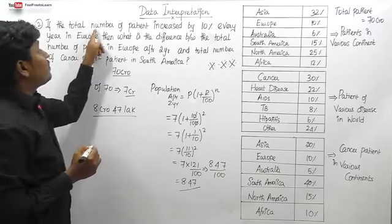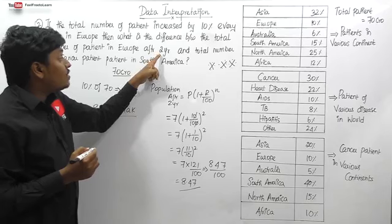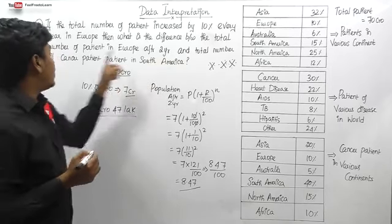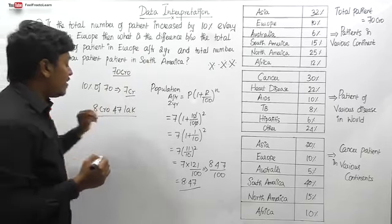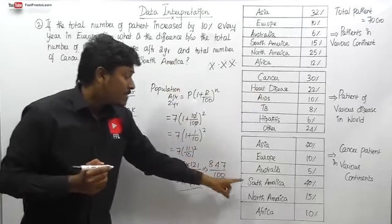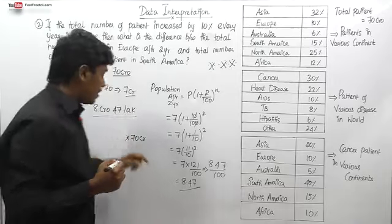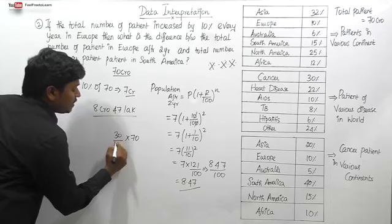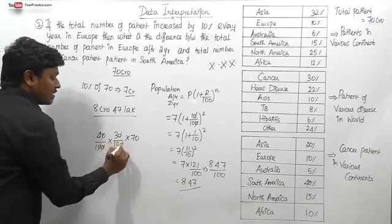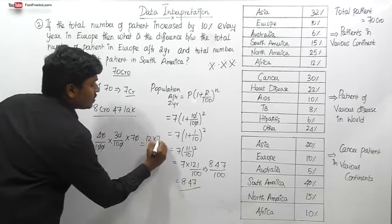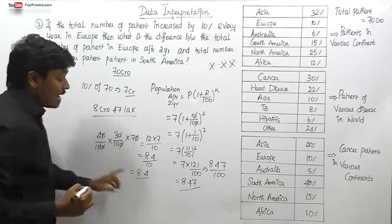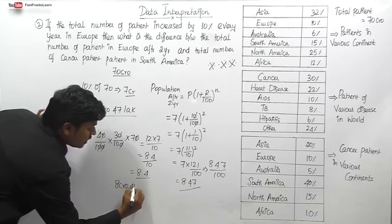Now for the second part: cancer patients in South America. Out of 70 crores, cancer patients are 30%. Out of cancer patients, South America is 40%. So 70 into 30/100 into 40/100: canceling zeros gives 7 into 3 into 4 divided by 10. That is 84 divided by 10 = 8.4, which means 8 crore 40 lakh cancer patients in South America.